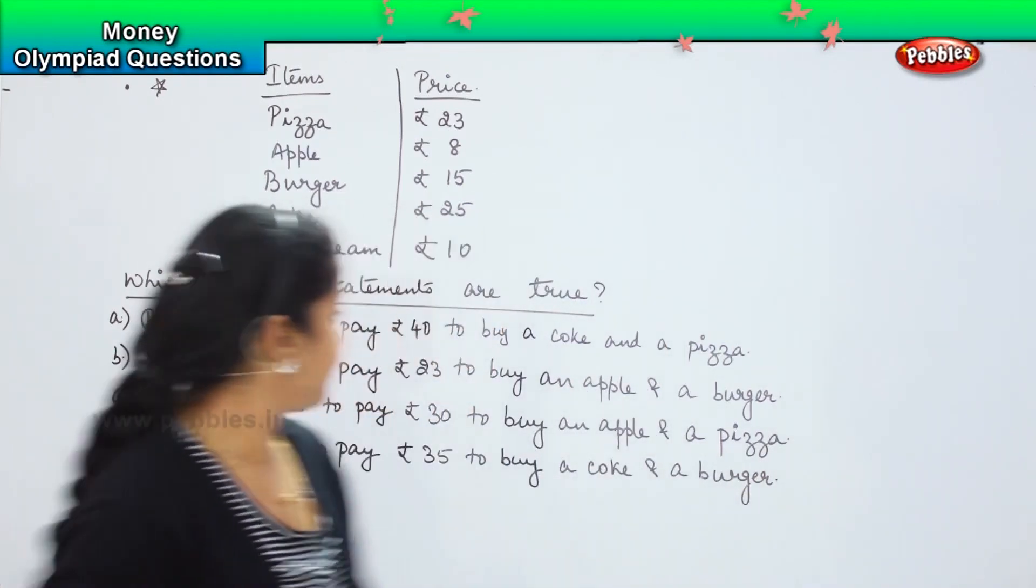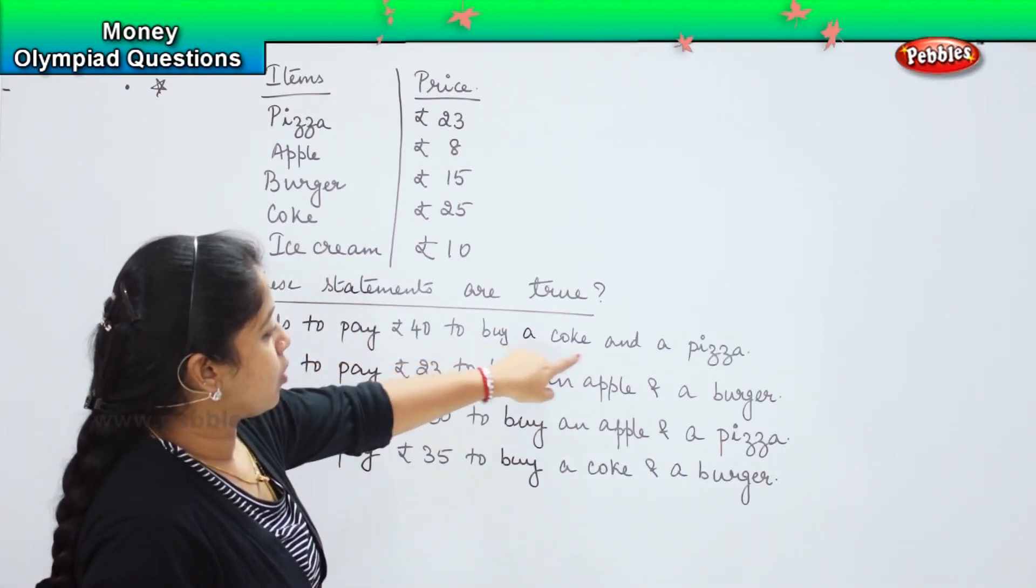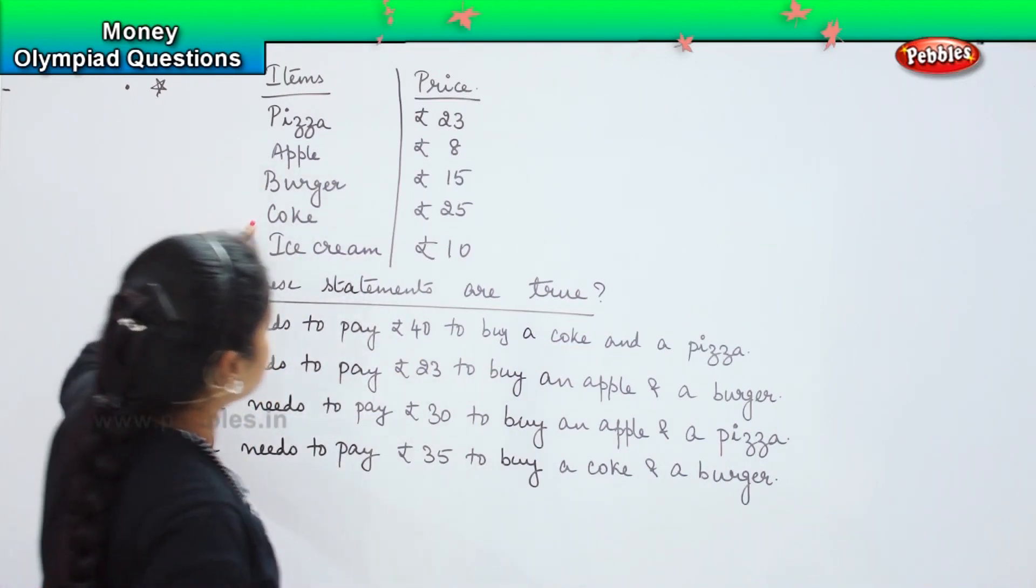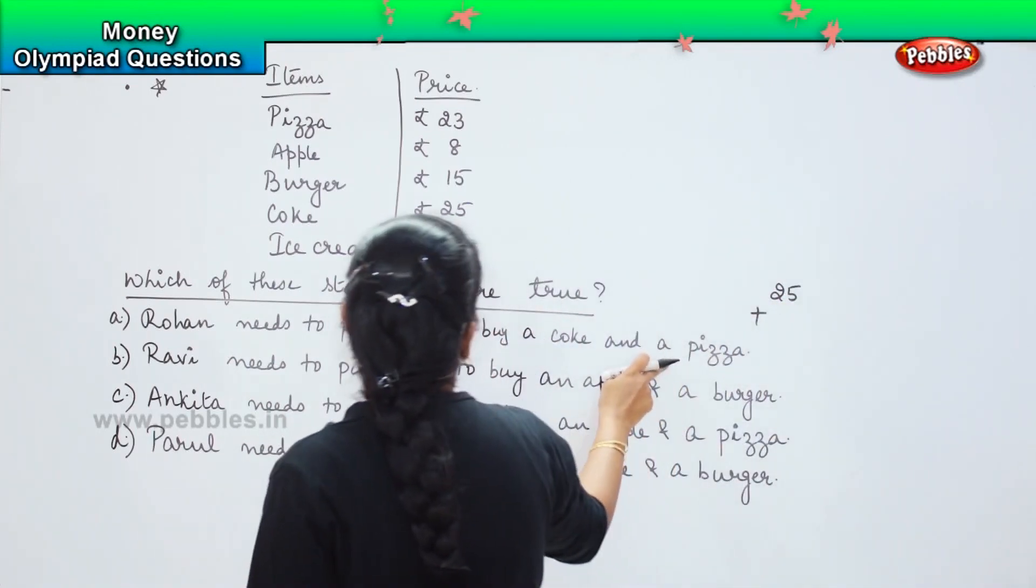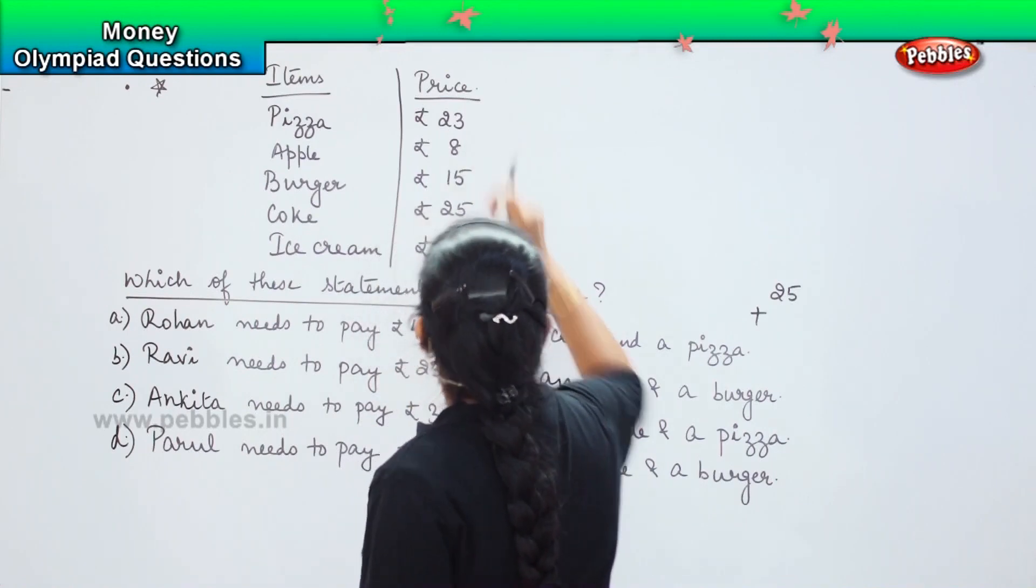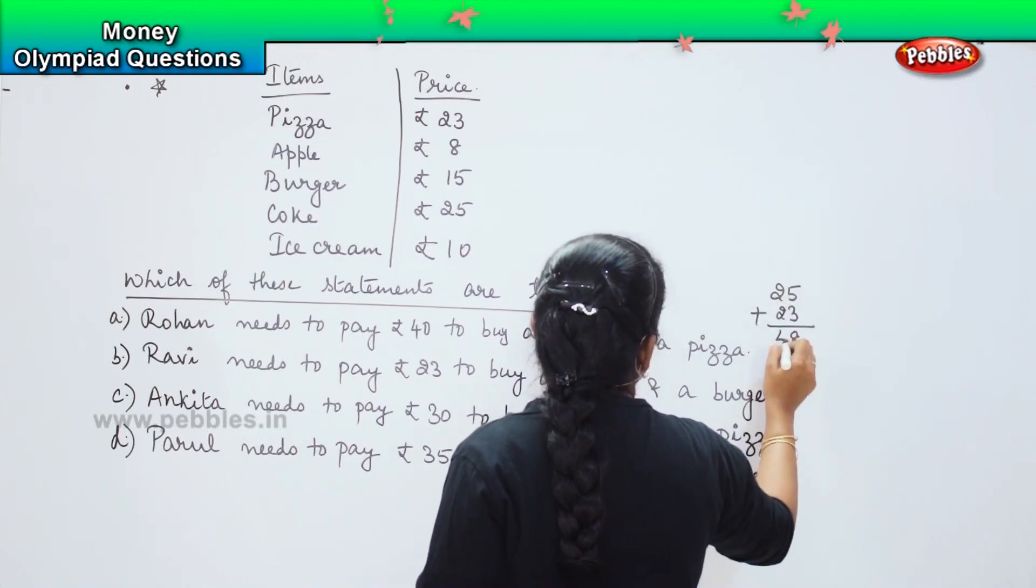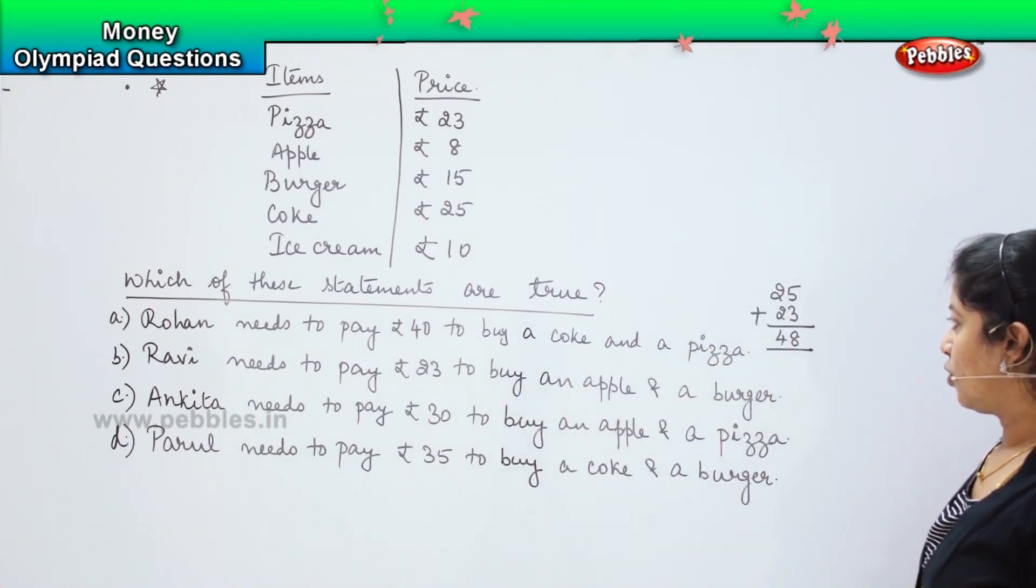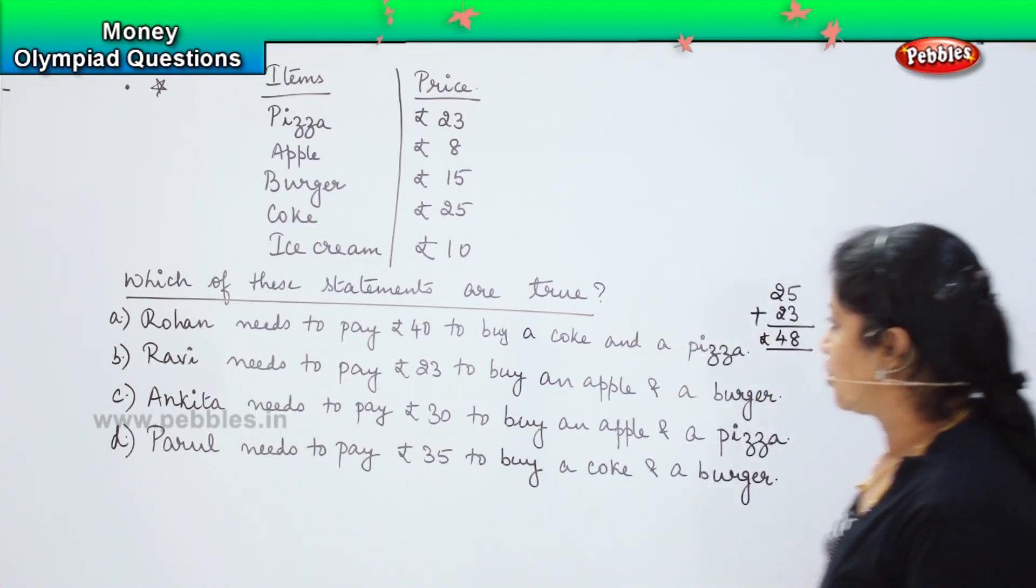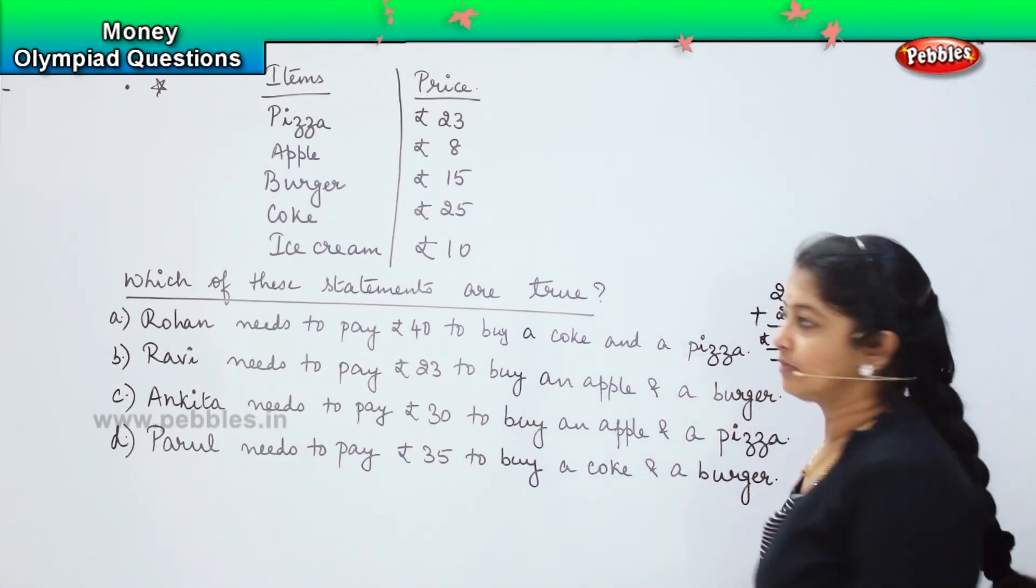So, now coming to the first one, Rohan needs to pay rupees 40 to buy a coke and a pizza. What is the value of a coke, children? It is 25, right. So, 25 plus, and he wanted to buy a pizza. Pizza cost him rupees 23. So, 5 plus 3 is 8 and 2 plus 2 is 4. So, he needs to pay rupees 48 to buy a coke and a pizza. Is it correct? No, because only if he has 48 rupees he can buy that. Otherwise, he cannot buy. So, which means that this is a false statement.